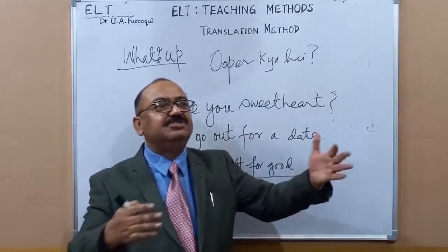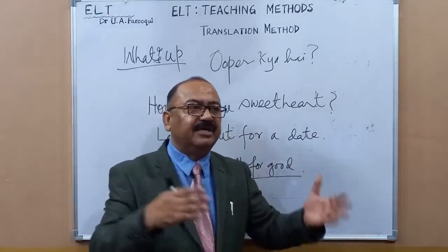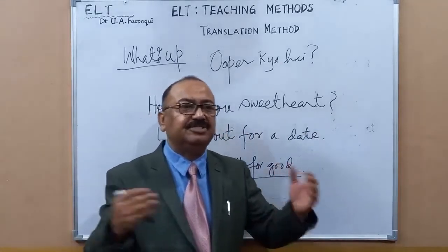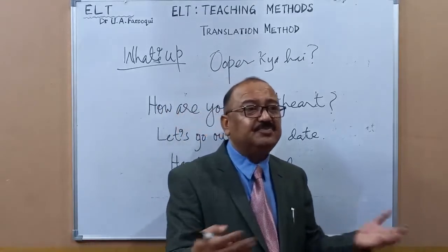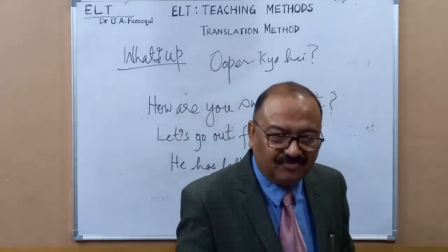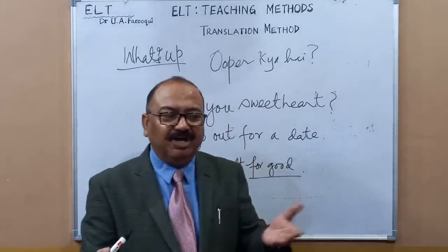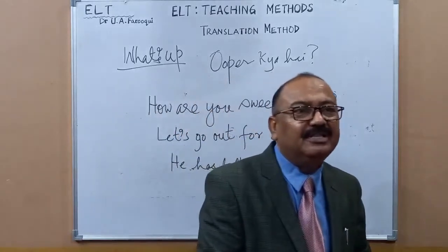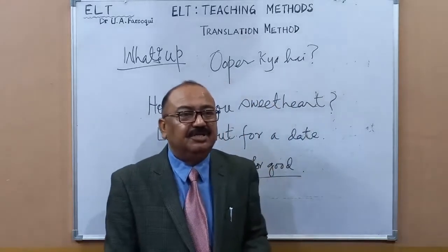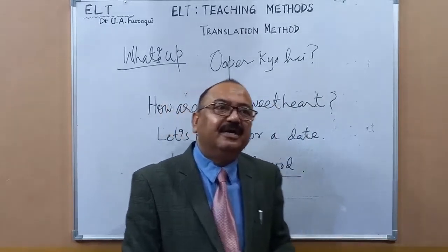For example, a teacher would say: 'Once upon a time' - 'Ek baal ki baat hai'; 'there was a king' - 'ek raja tha'; 'he had four sons' - 'us ke char bete the.' This is how it goes. This makes for very dull teaching of English because the students are not interactive - they are the passive recipients of knowledge, passive learners.